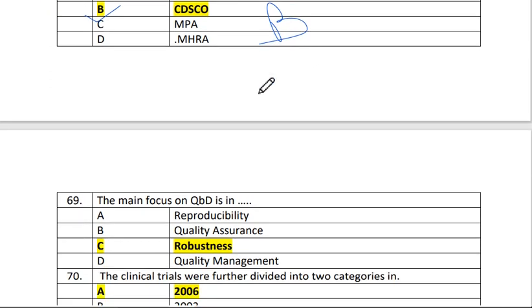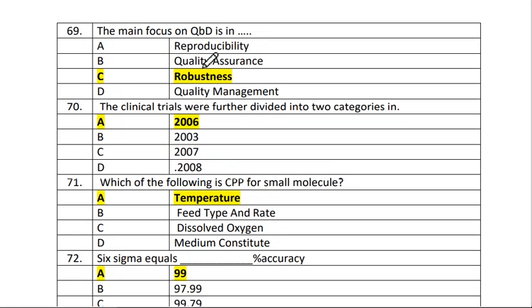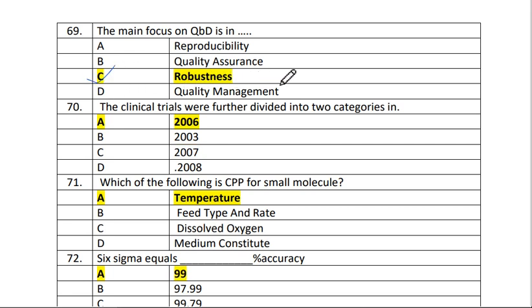Next is question number 69. The main focus of QbD is robustness. The answer is C.